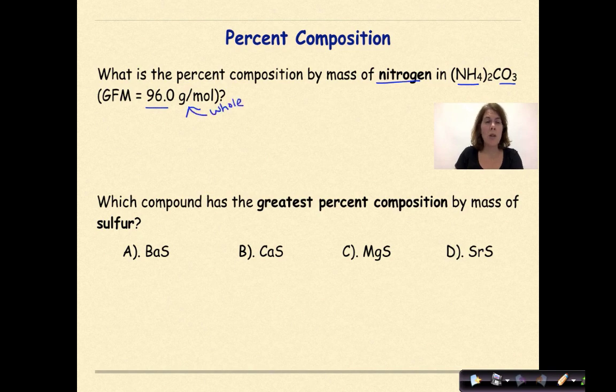So percent composition is part over the whole times 100. Let's start out by writing out our formula. NH4 to CO3.